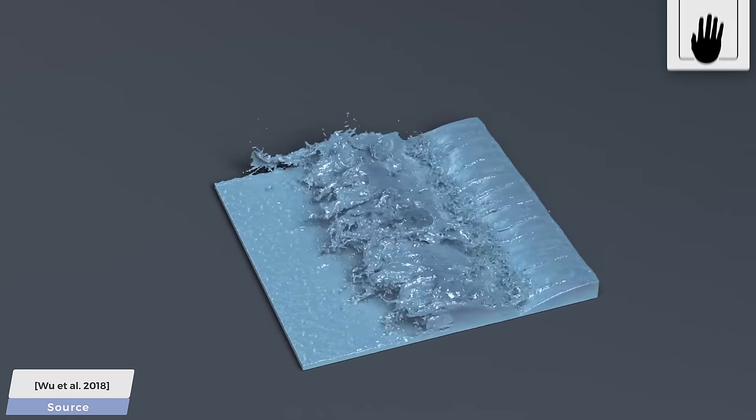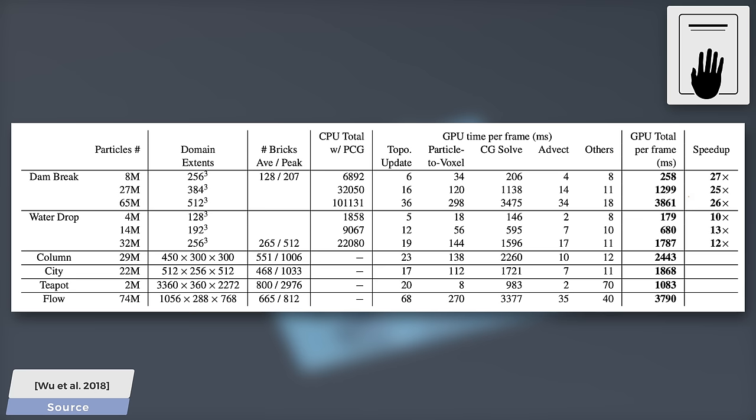And, finally, hold onto your papers because if you look here, you see that the dam break scene can be simulated with about 5 frames per second, not seconds per frame, while the water drop scene can run about 7 frames per second with a few million particles. We can, of course, scale up the simulation, and then, we are back at seconds per frame land, but it is still blazing fast.